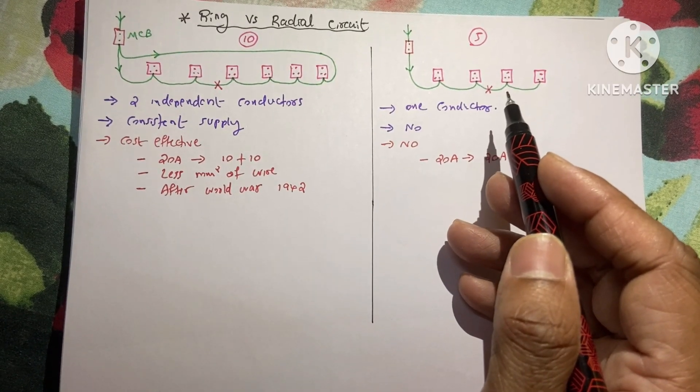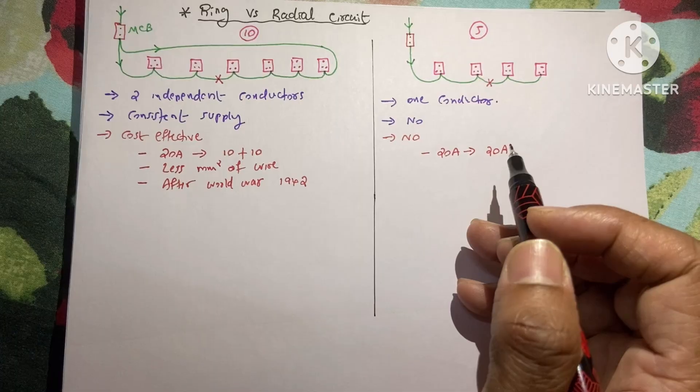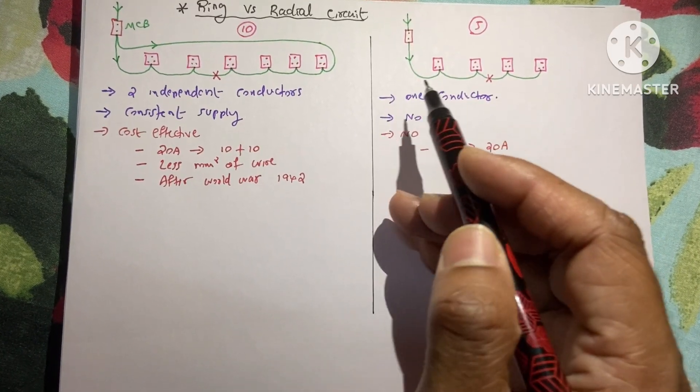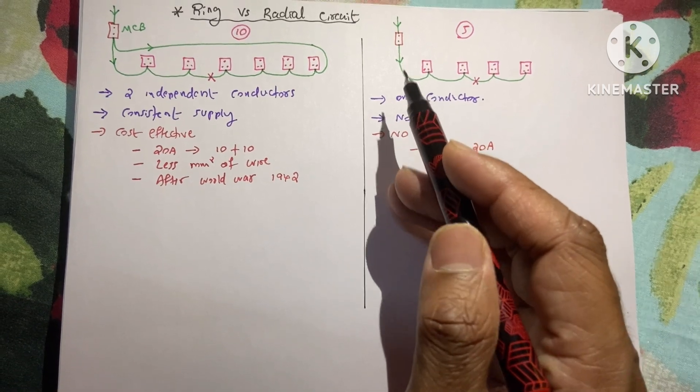Suppose these sockets require 20 Ampere of current, then that 20 Ampere would flow only through this way in radial circuit. So we cannot make this wire half width.